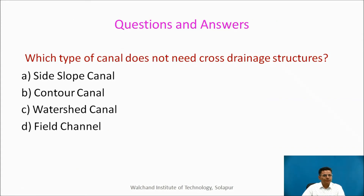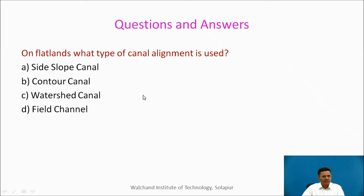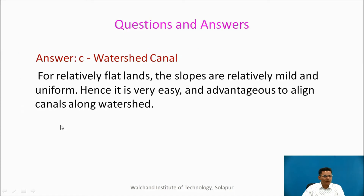Let us have some question answers. First question: Which type of canal does not need cross drainage structures? Options: side slope canal, contour canal, watershed canal, or field channel? Answer is side slope canal, because it is parallel to natural drainage lines and does not need cross drainage structures. Second question: On flat lands, what type of canal alignment is used? Options: side slope canal, contour canal, watershed canal, or field channel? Answer is C, watershed canal. For relatively flat lands, the slopes are relatively mild, and hence it is very easy and advantageous to align canals along the watershed.